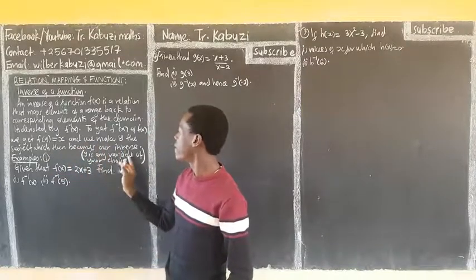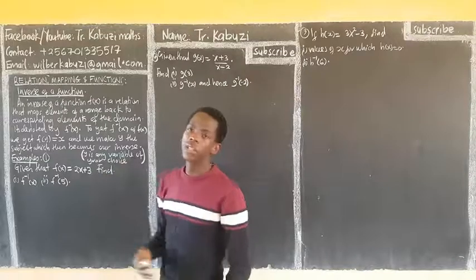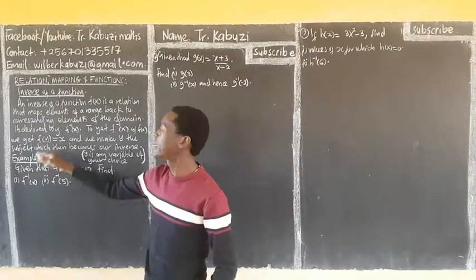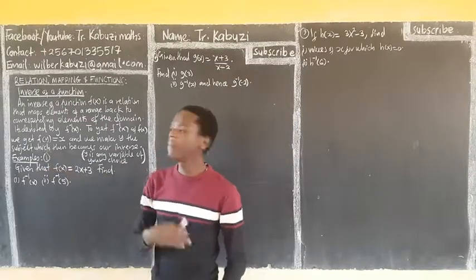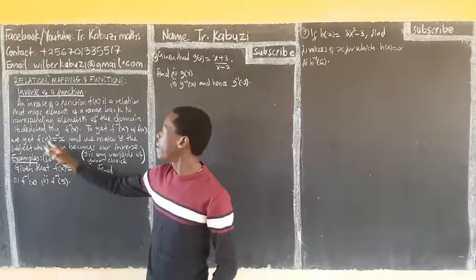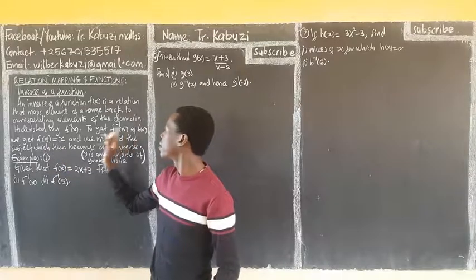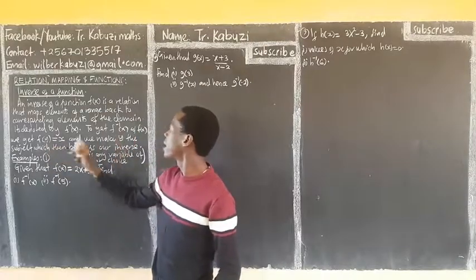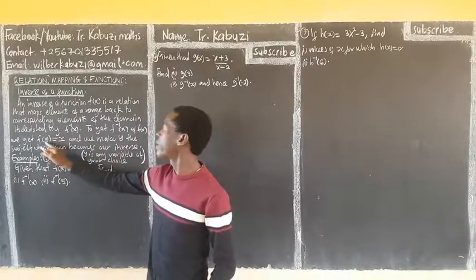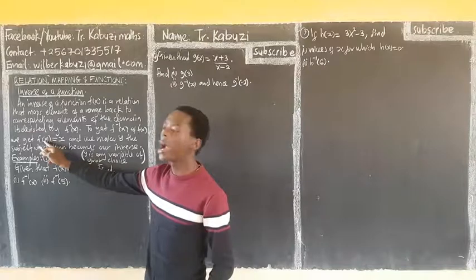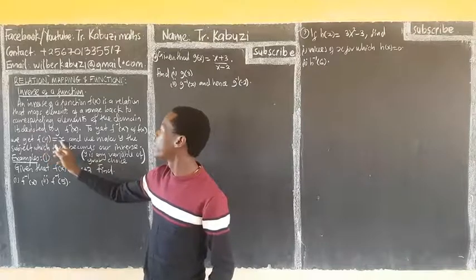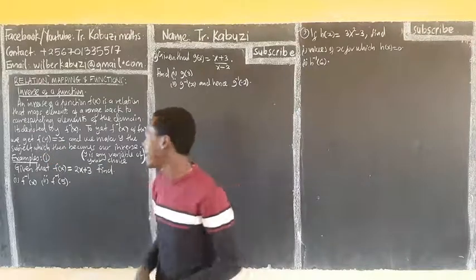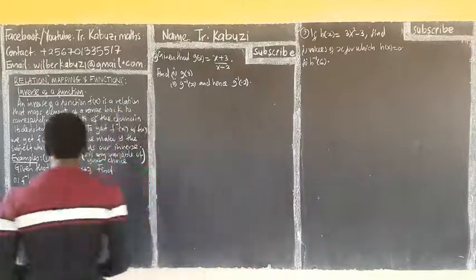Y is then a variable of your choice, so this y can be any variable. What you do: in that function of x, you substitute where there is x with y, and you equate that function to x. After substituting y, you equate that function to x. Let us see this now.